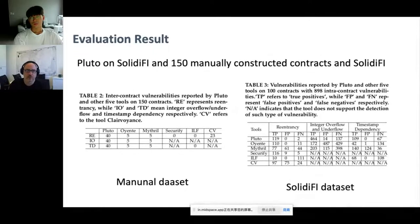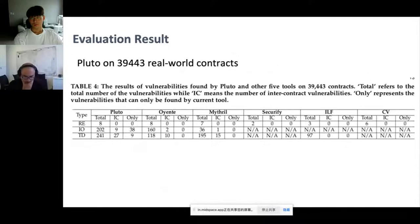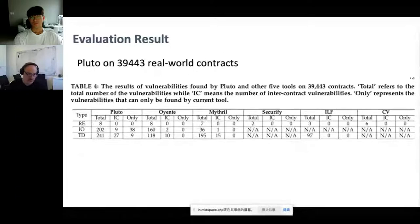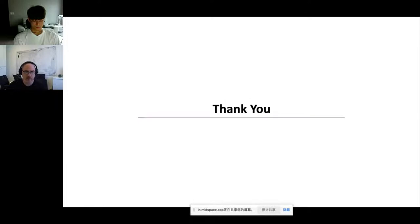On the Solidity dataset shown in Table 3, Pluto reported 681 valid vulnerabilities on 100 contracts, which is the best of all tools. We then evaluated Pluto and other tools on 8,173 real-world Solidity files with 39,443 smart contracts. Pluto finds the most vulnerabilities in real-world contracts and can detect 36 intercontract vulnerabilities, while other tools only find 12 and 16 respectively. For more details, please refer to our paper published in ICSE. Thank you.